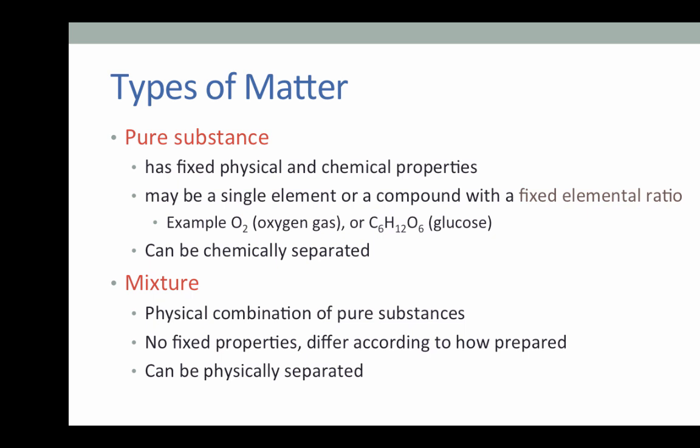Matter can be loosely grouped into two broad categories: pure substances and mixtures. A pure substance has fixed physical and chemical properties. This means that no matter where this substance is collected, on Earth, on Mars, at the bottom of the ocean, it will behave the same way, both physically and chemically. Pure substances can be either a single element from the periodic table, or a compound that has a fixed ratio of these elements.